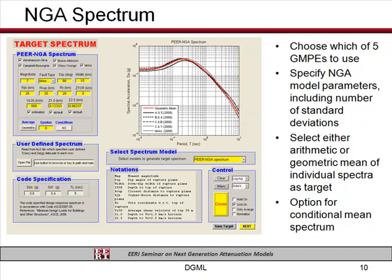You specify the various parameters: magnitude, distance, style of faulting, dip, depth, width of rupture, depth to the top of rupture, VS30, number of standard deviations, and which of the five relationships you want to use — all of them or only some. It will then construct the spectrum for the individual models and compute the geometric mean or the arithmetic mean of the result, that's your choice.